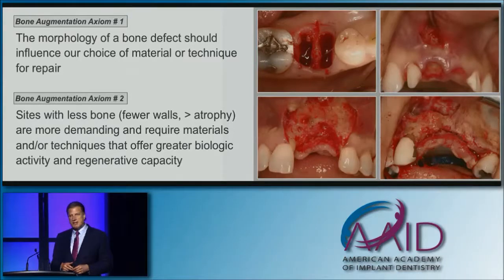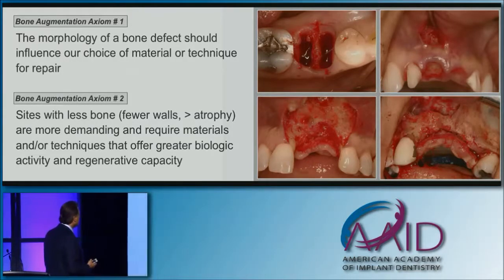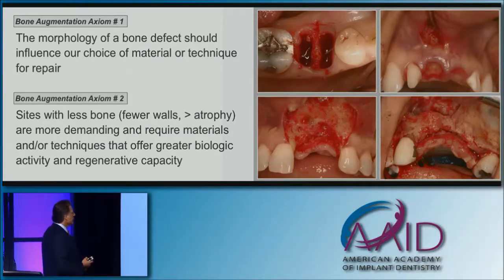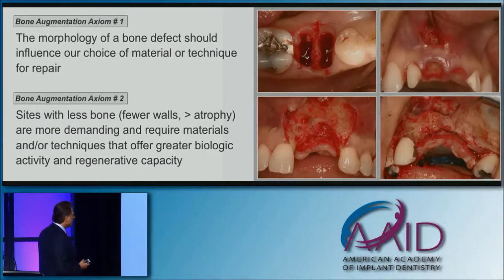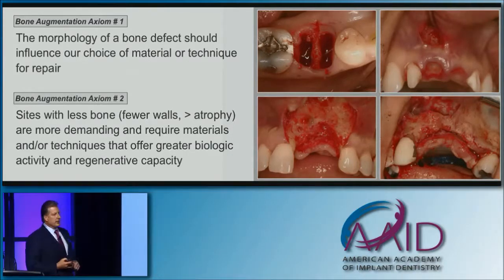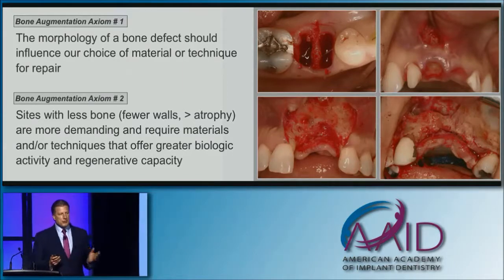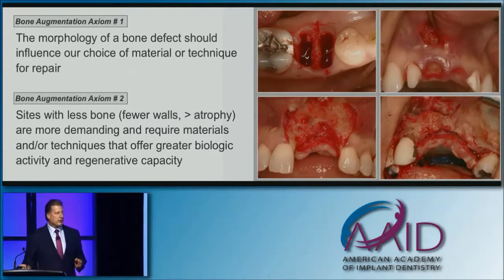To begin with, I want to get everyone on the same foundation. Two axioms that I have: The morphology of a bone defect should influence our choice of material or technique for repair. The second axiom is that sites with less bone, with fewer bony walls, or greater atrophy are more demanding and require materials or techniques that offer greater biologic activity and regenerative capacity. This is the foundation for what we'll be discussing today.